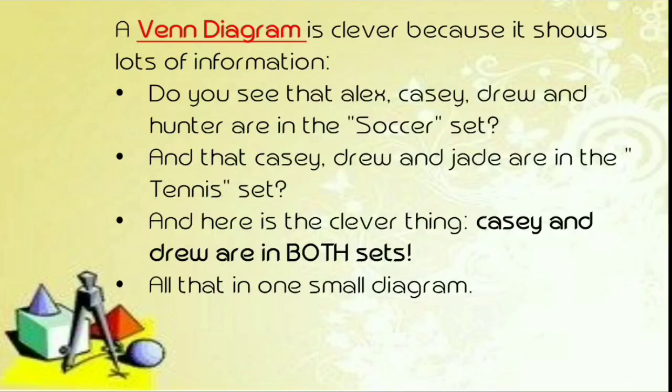A Venn diagram is clever because it shows a lot of information. Do you see that Alex, Cassie, Drew, and Hunter are in the soccer set? And that Cassie, Drew, and Jade are in the tennis set? And here is the clever thing — Cassie and Drew are in both sets. All that in one small diagram. Sa unang bilog, makikita natin nasa soccer si Alex, si Cassie, Drew, at si Hunter. Nasa ikalawang bilog naman ang mga naglalaro ng tennis na si Cassie, Drew, at si Jade. Pero si Cassie at si Drew ay nasa pagitan ng dalawang bilog.